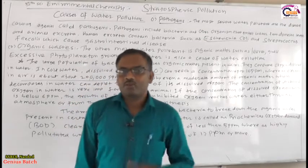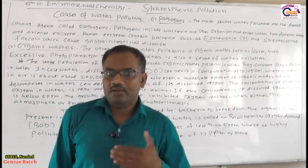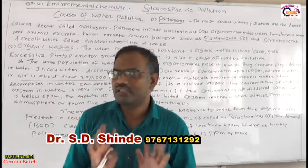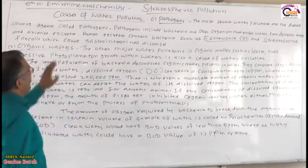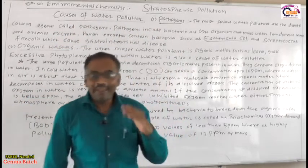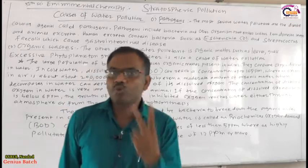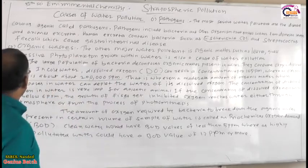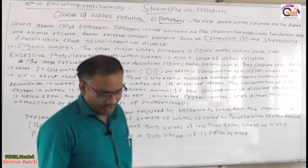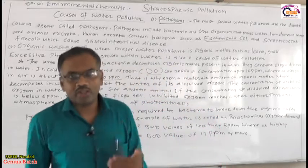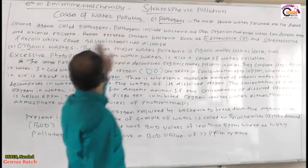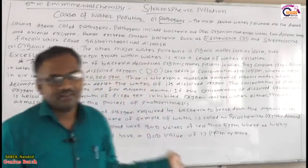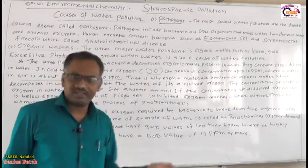We have completed the sources and water pollutants. Next is the causes of water pollution. There are two main causes of water pollution: first is the pathogen and the second one is the organic waste. We will see them one by one, as this is a very important concept.